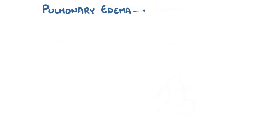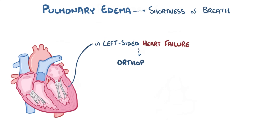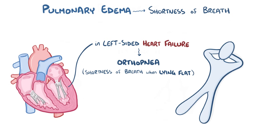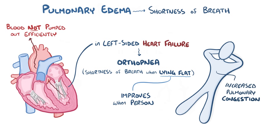Pulmonary edema can lead to severe shortness of breath, and in left-sided heart failure it can lead to orthopnea, which is when there's worse shortness of breath while lying flat. This happens because there's increased pulmonary congestion while lying down, and in left-sided ventricular heart failure the pulmonary circulation is already overloaded. As a result, the extra blood can't be pumped out efficiently and it causes shortness of breath, which decreases when a person sits up.